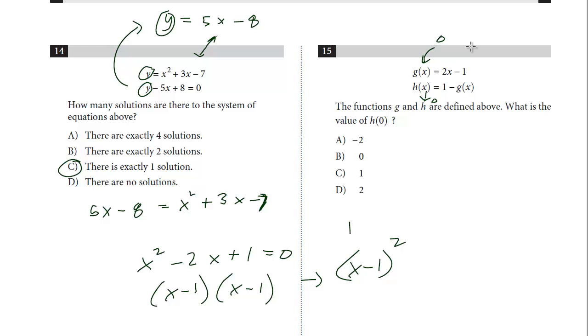So we're just going to plug in a 0 here for x. So g of 0, whenever we see an x, we're going to plug in a 0. We get 0 minus 1. So we know that g of 0 is negative 1.